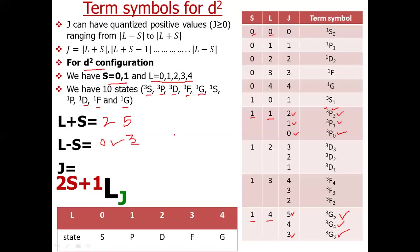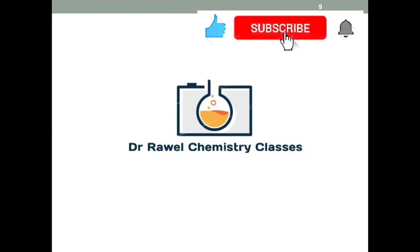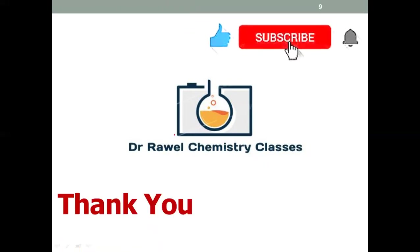I hope you have understood the topic. Please try to do it by yourself so that you can learn properly. So far in this lecture we studied how to find the term symbol for a given configuration from values of L and S. In my next lecture I will show you how to find term symbols from the electronic configuration of atoms and how to find the ground state terms. If you liked the video, please do subscribe to my channel. Thank you very much.